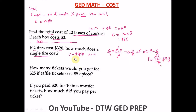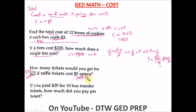The next example: how many tickets would you get for 25 dollars if raffle tickets cost five dollars a piece? We are looking for the number of units N. The total cost C is 25 dollars, and the price per unit P is five dollars per ticket.